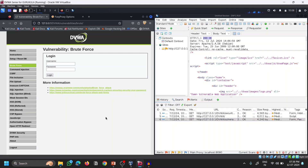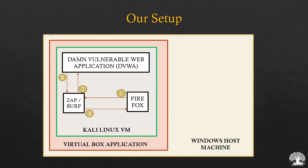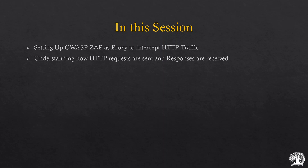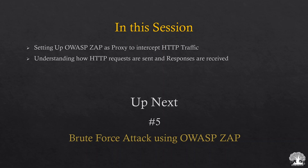I hope you now have a clear understanding of how to set up ZAP as a proxy to intercept packets. In this session we set up ZAP as a proxy, intercepted HTTP traffic exchanged between client and server, and understood how HTTP requests and responses look — responses are typically HTML code or other resources sent from the server. In the next video, I will explain how to perform a brute force attack using OWASP ZAP. Stay tuned — it's bye from Jai, and happy learning.